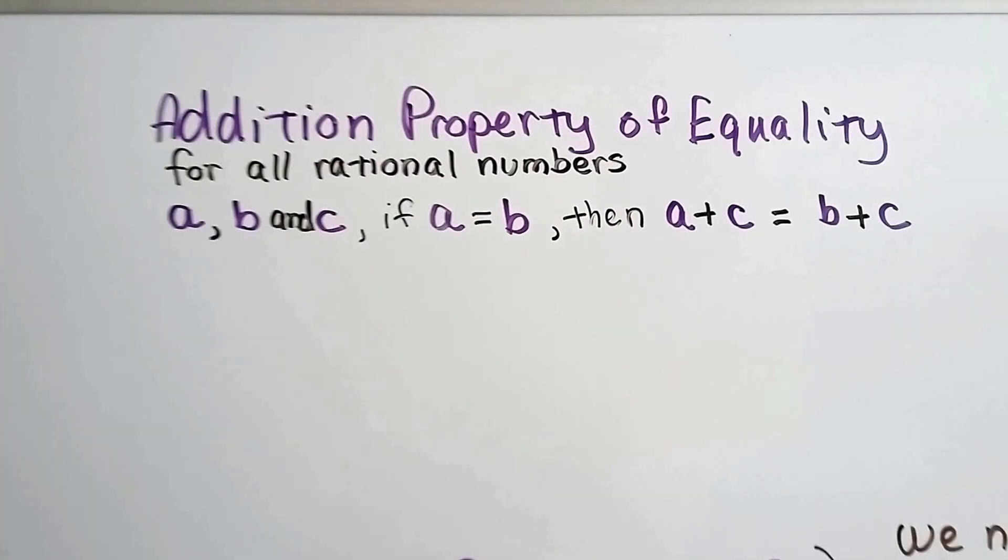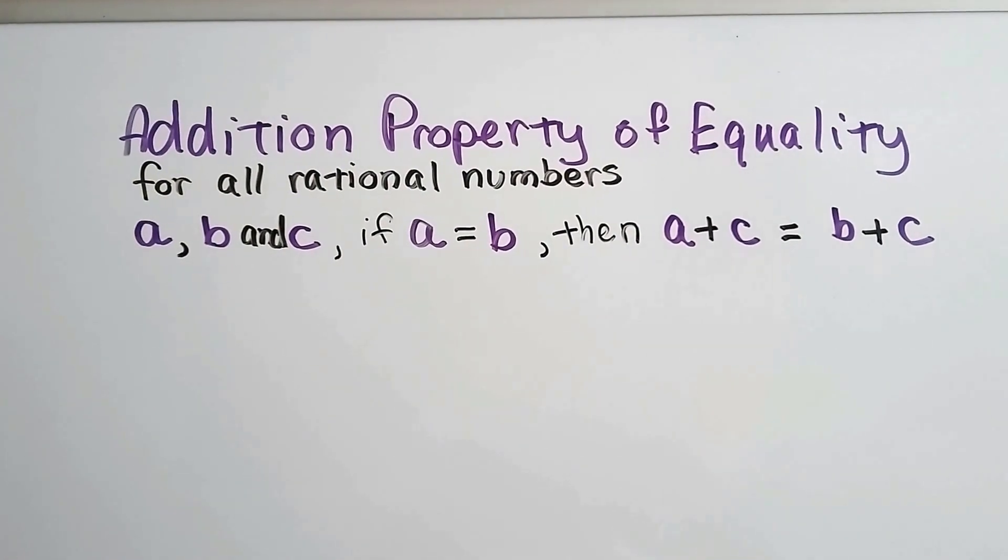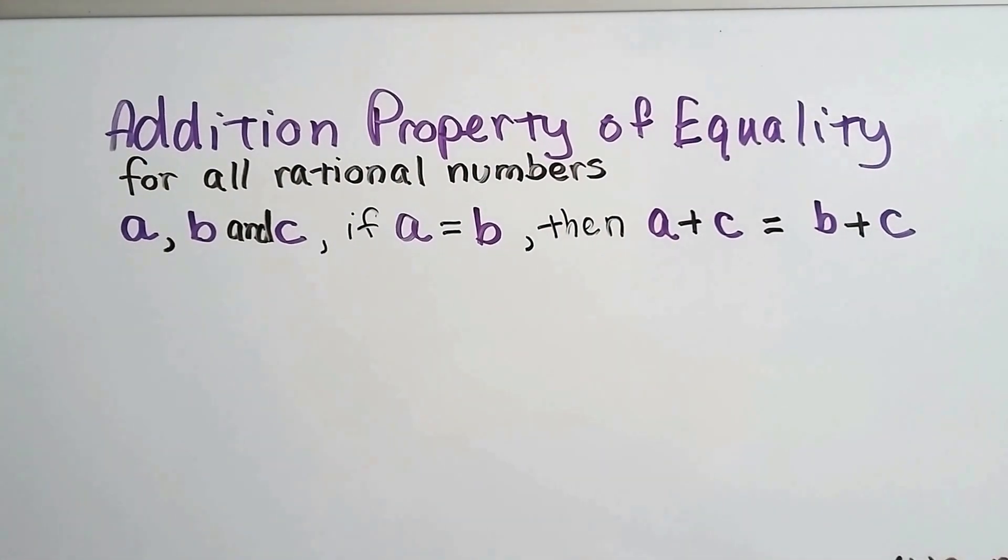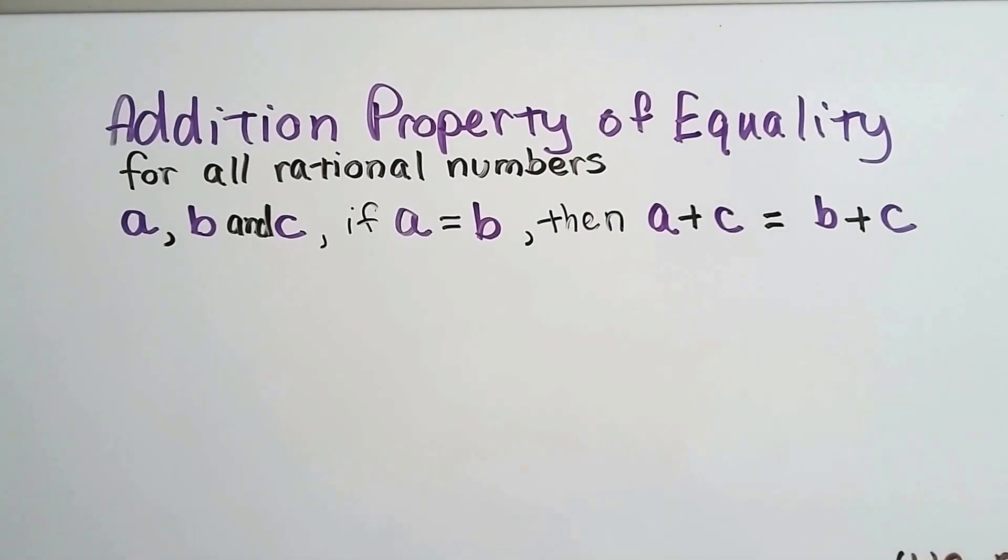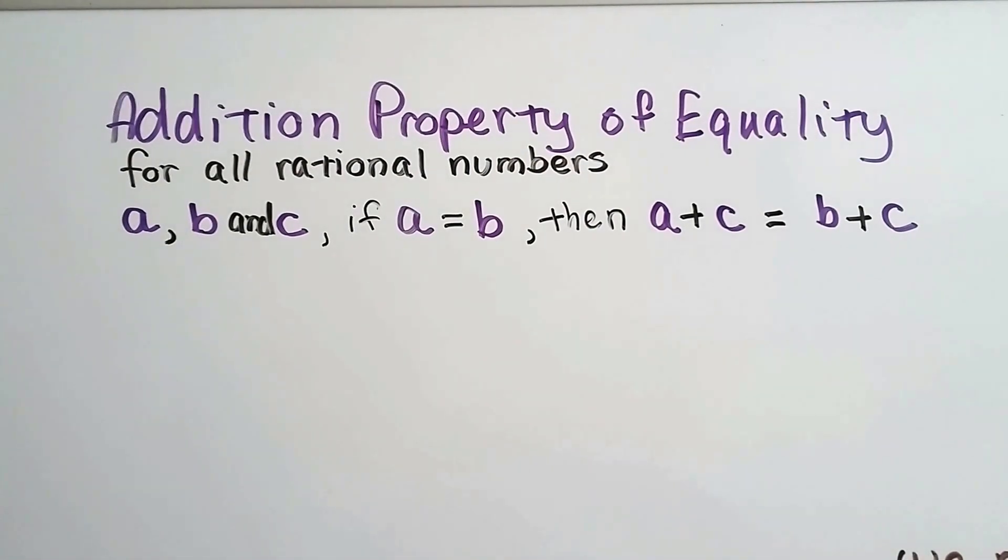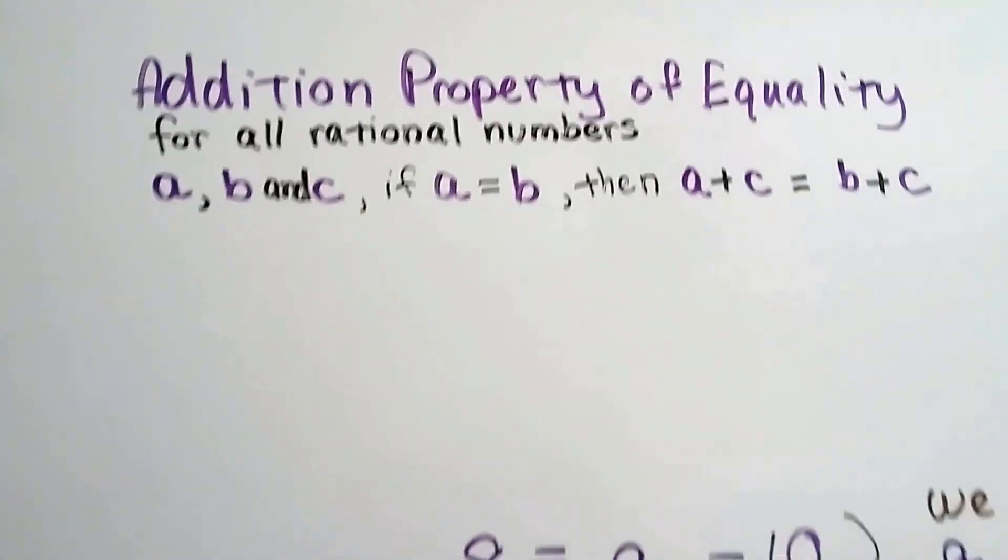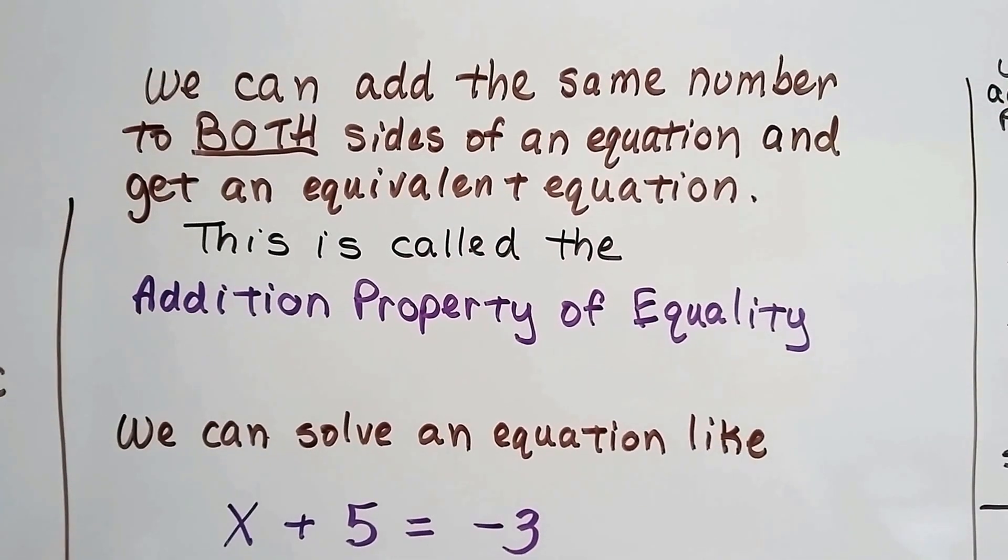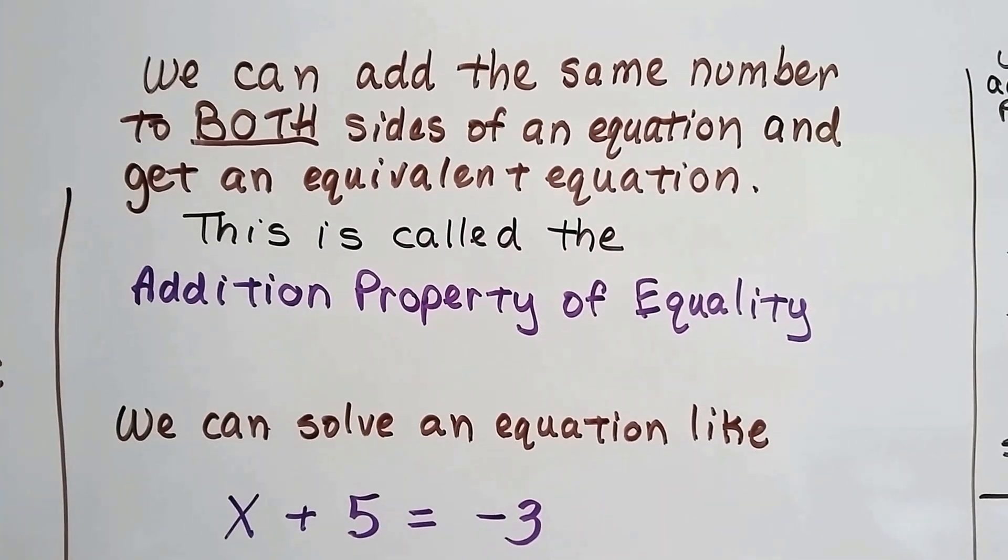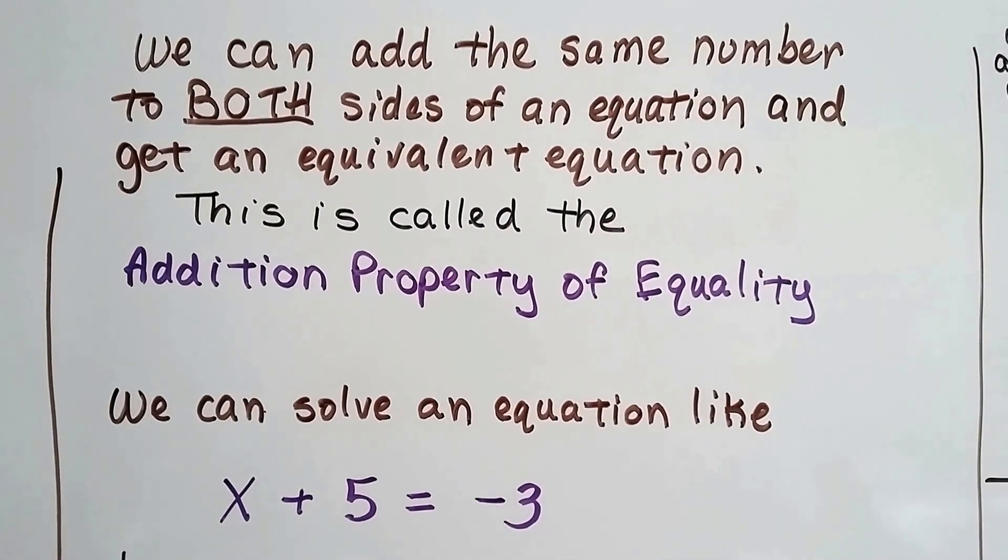So here's the formal addition property of equality. For all rational numbers a, b, and c, if a equals b, then a plus c is going to equal b plus c. Because a and b are equal to each other, they can both be added to c and be the same thing. So we can add the same number to both sides of an equation and get an equivalent equation. This is called the addition property of equality.